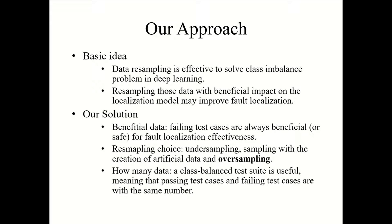Second, we have different resampling techniques — which one is proper for fault localization? We usually have three major types. Under-sampling removes data from the majority class to match the number of the minority class, but it is harmful for deep-learning-based fault localization because it causes significant information loss. Sampling with creation of artificial data generates new synthetic data similar to the minority class. However, in software testing and debugging, we cannot simply conclude that a test case similar to a failing test case should itself be a failing test case, so we cannot simply assign the labels of similar synthetic data as the minority class.